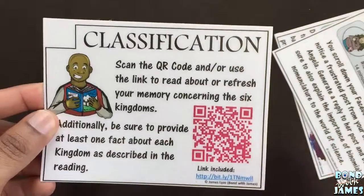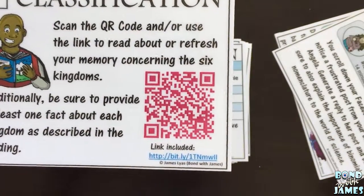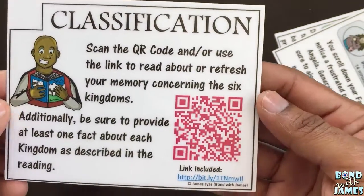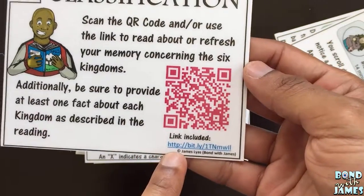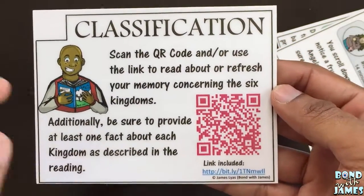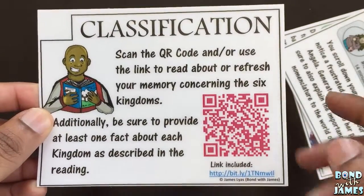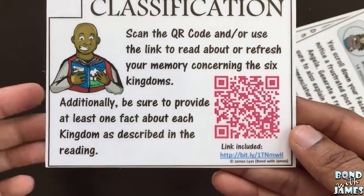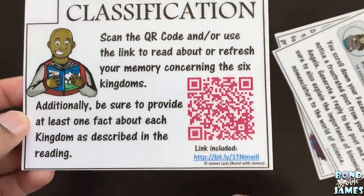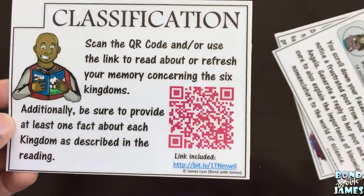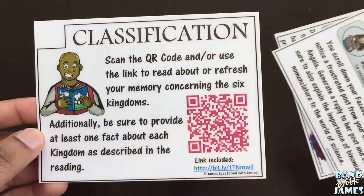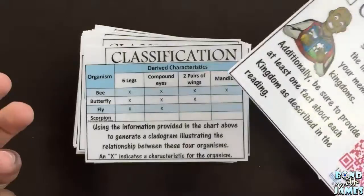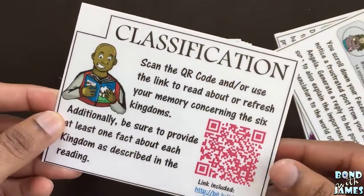I've also included some QR codes. Now, if your class doesn't have access to QR codes, for example on an iPad, or your students don't have access to that technology but do have computers, they can always access through the bit.ly link that I've included. Just depending on the card with the QR code, it might take them to a website where they have to read a short article and provide at least one fact about the kingdom they read about. It might take them to a YouTube video or some other type of video where they watch the clip and summarize or come up with an example.